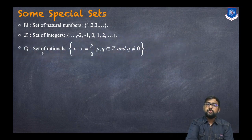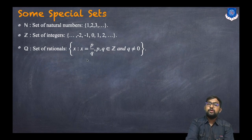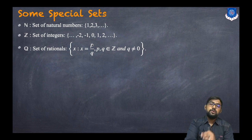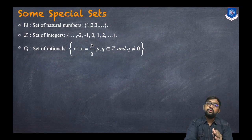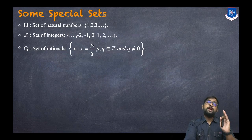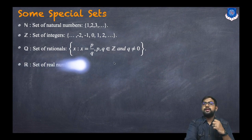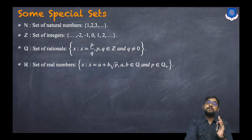Q is the set of rational numbers. It is expressed in set builder form because we cannot list all elements. Q = {x : x = p/q, where p and q both belong to Z, and q ≠ 0}.